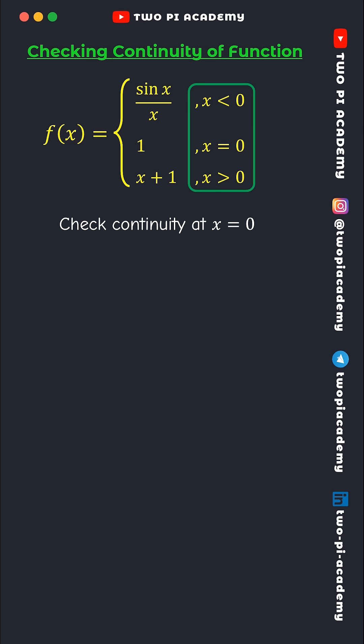At x equals 0, you can split this into three regions: x less than 0, x equals 0, and x greater than 0. For x less than 0, you'll take the left-hand limit of the function. At x equals 0, you'll take the value of the function. For x greater than 0, you'll take the right-hand limit. If all three of them are equal to each other, it means the function is continuous at x equals 0.